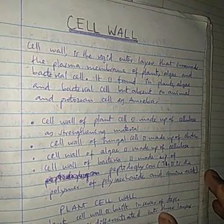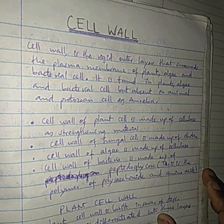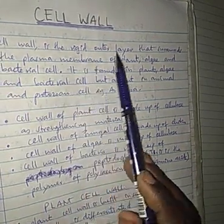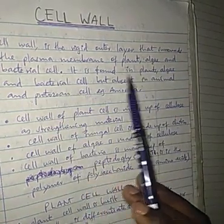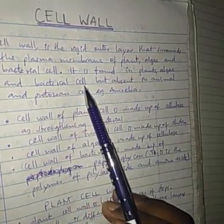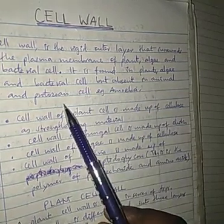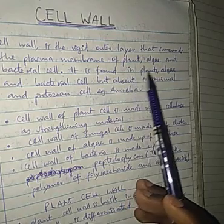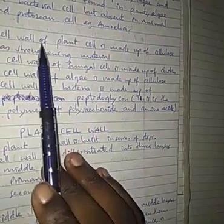Welcome back friends. Today we are going to discuss all the concepts about cell wall. Cell wall is the outermost outer layer that surrounds the plasma membrane of plant, algae, and bacterial cells. It is found in plants, algae, bacterial cells, and fungi, but it is absent in animal cells and protozoa such as amoeba.